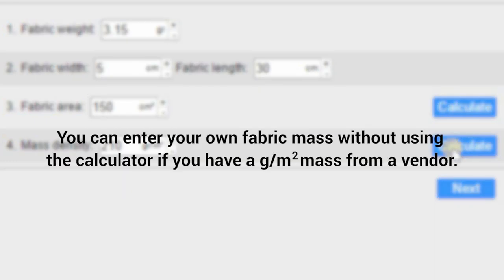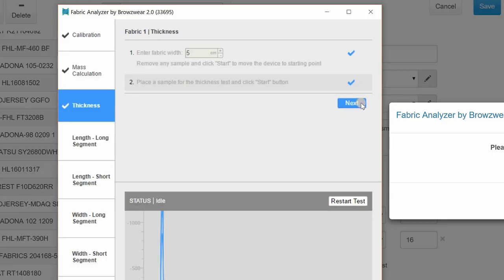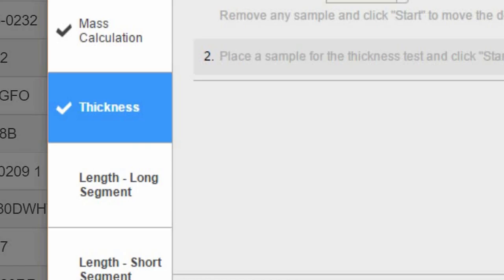Alternately, you can enter your own fabric mass without using the calculator if you have a grams per meter squared mass from a vendor. Click Next to start the following test. As you can see, the Thickness Test section is now highlighted.